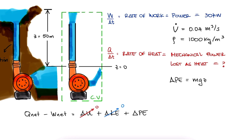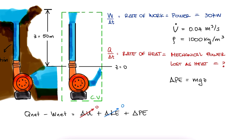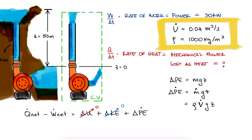This means that we need to divide the conservation of energy equation by time to have all variables as rates. Because of this, the change in potential energy rate is basically the mass flow times g times z. The mass flow, as we learned in the main lecture, can be written as density times volumetric flow, both of which we were given.